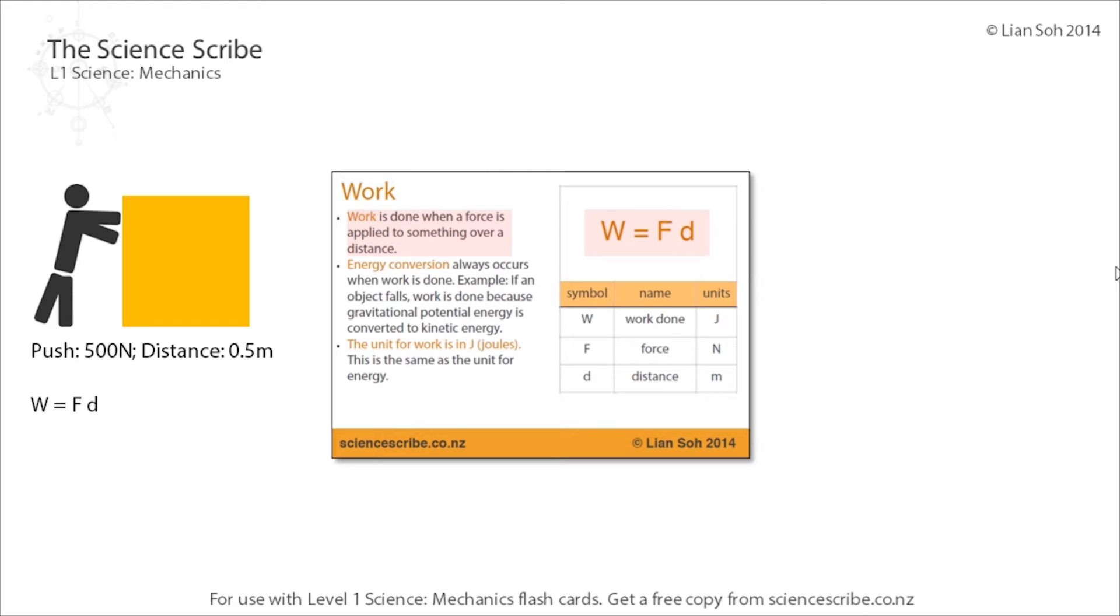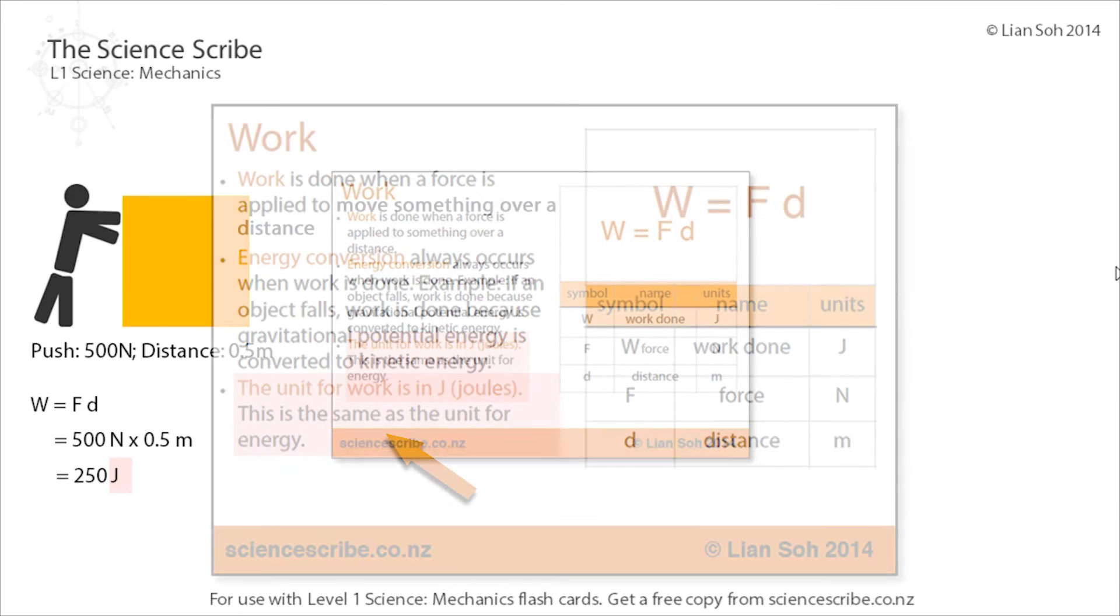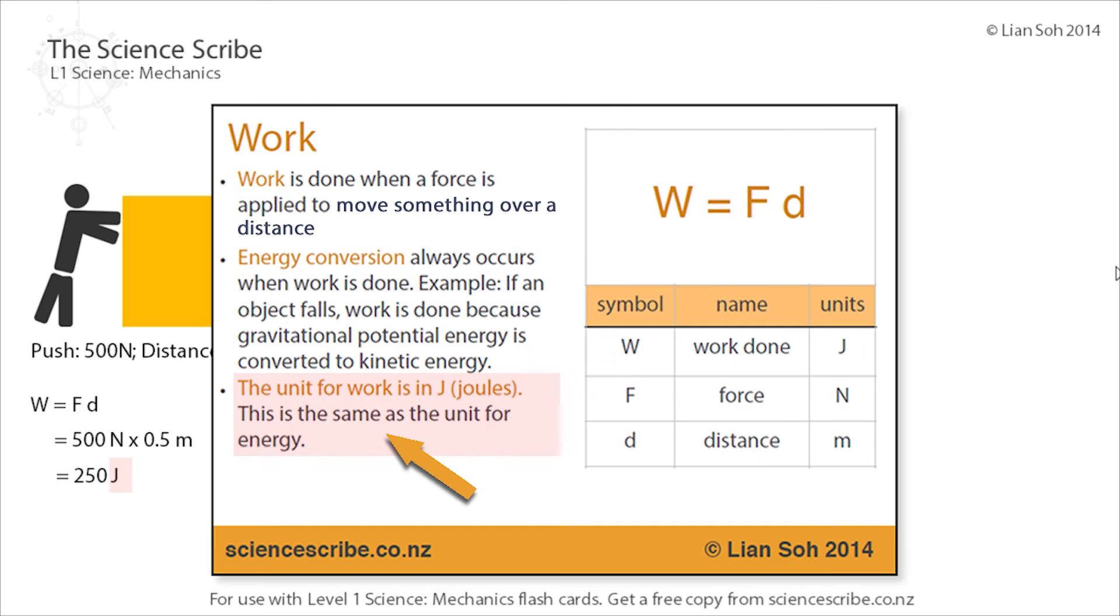If I wanted to calculate the work being done, I'd just go W equals F times d, as is in the formula. The force was 500 newtons, distance was 0.5 metres. Chuck the numbers in the calculator gives you 250 joules. The unit for work is in joules, which is the same as the unit for energy, and that's a capital J, not a little j.